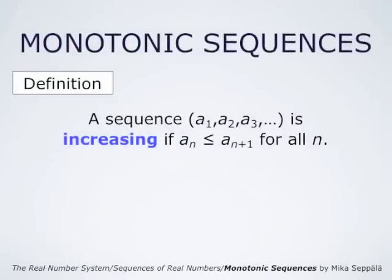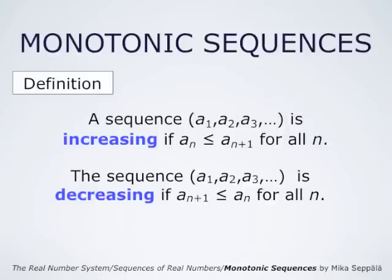A sequence A1, A2, A3 and so forth is called increasing if AN is always at most AN+1 for all N — that is, if these numbers AN grow as N grows. Likewise, a sequence A1, A2, A3 and so forth is called decreasing if AN+1 is always at most AN for all N, that is, if these numbers get smaller as N grows.